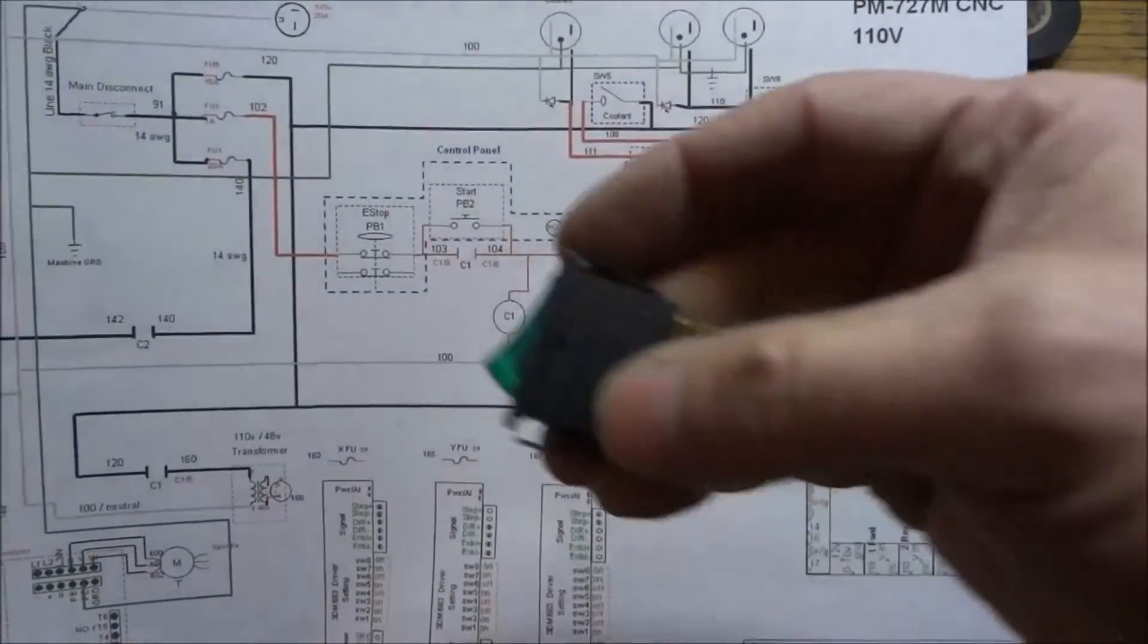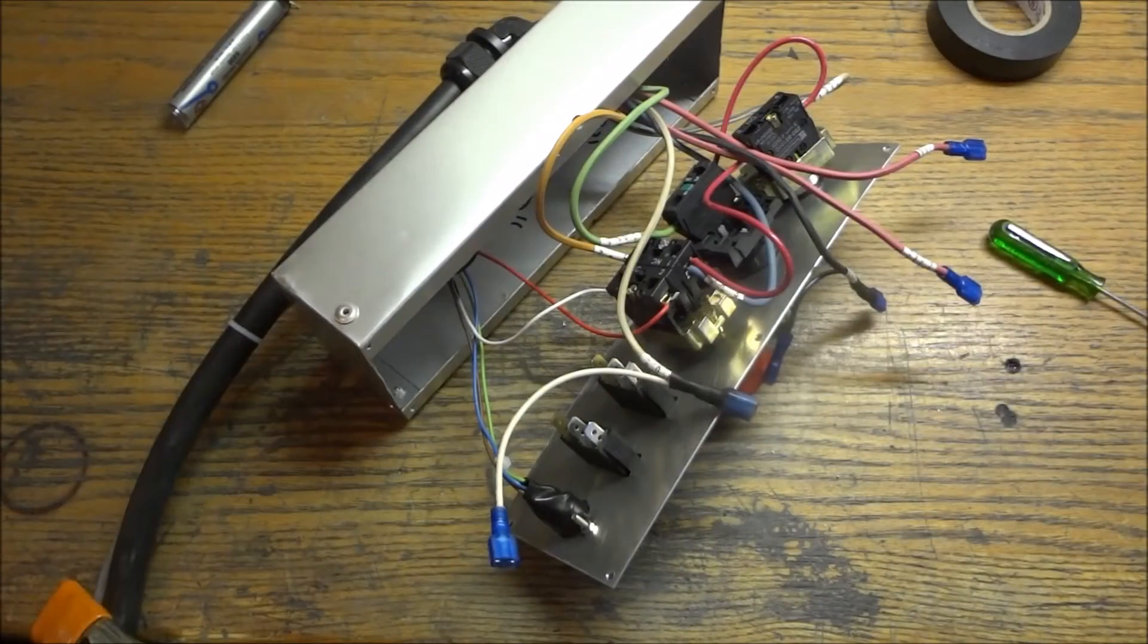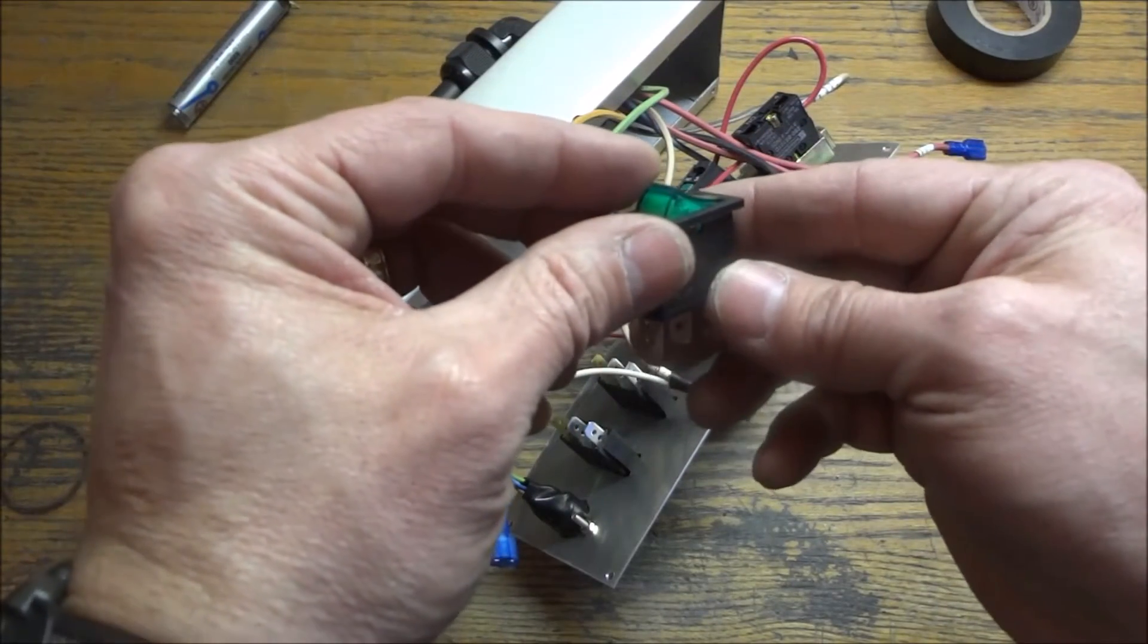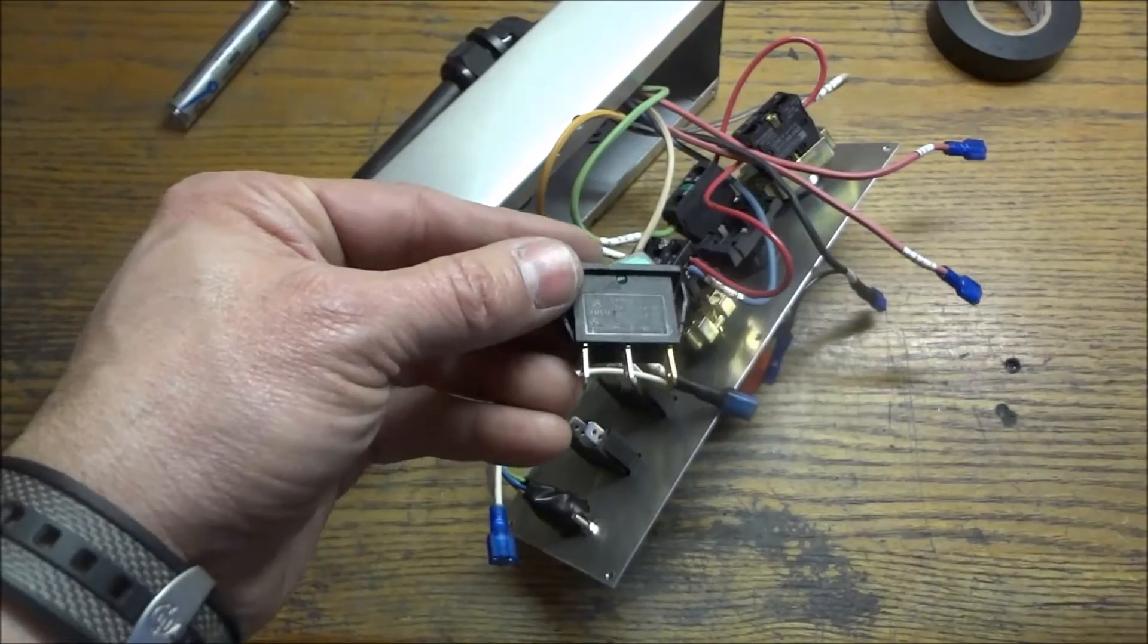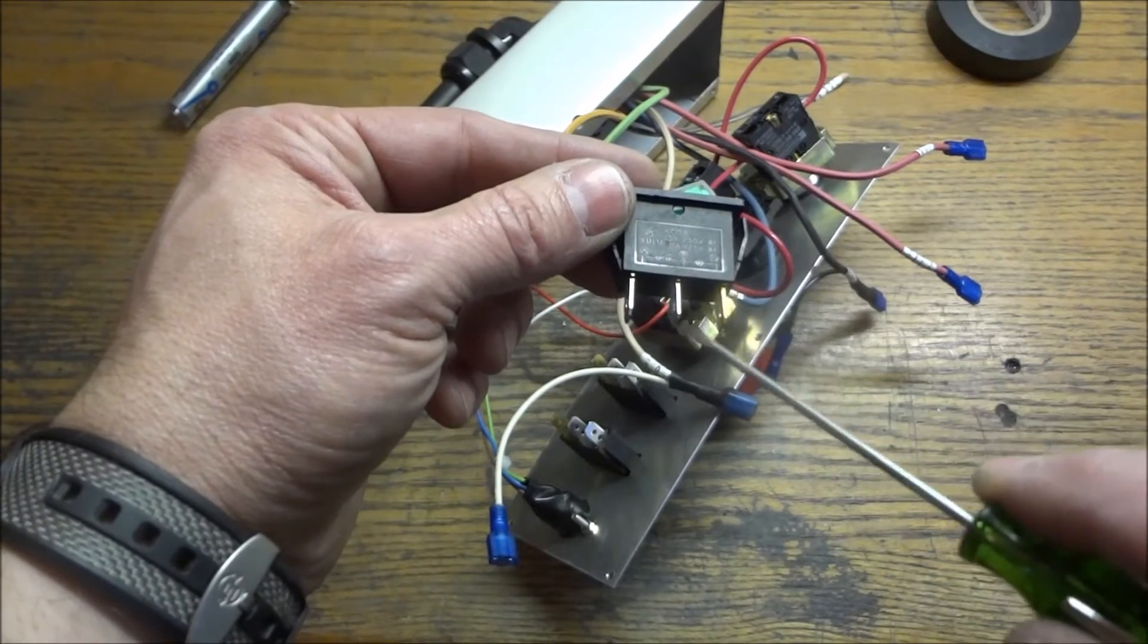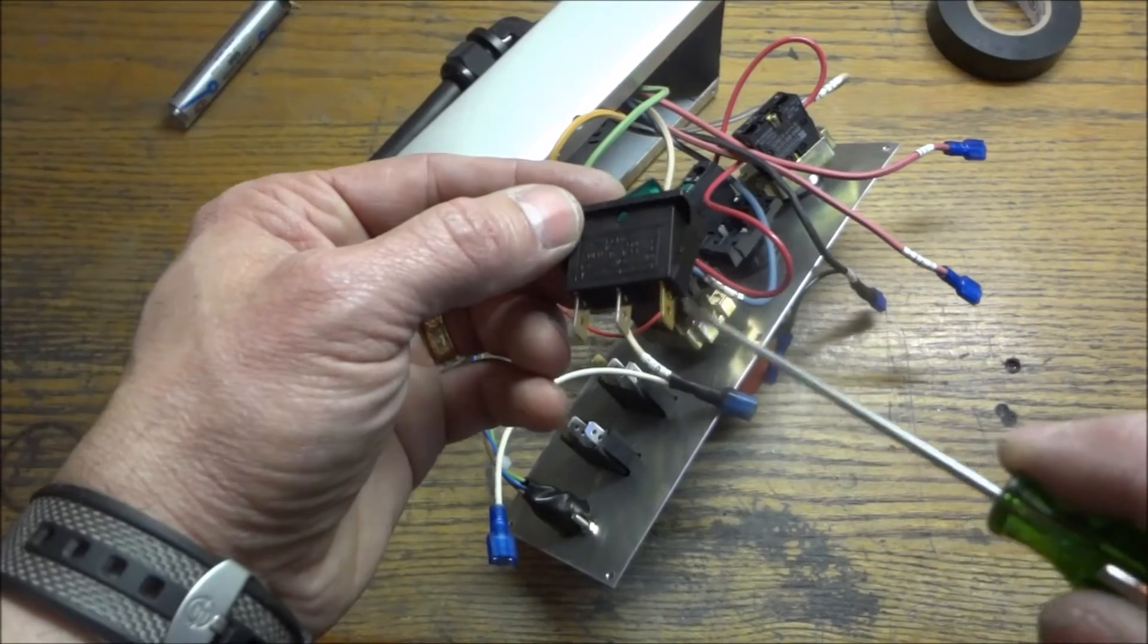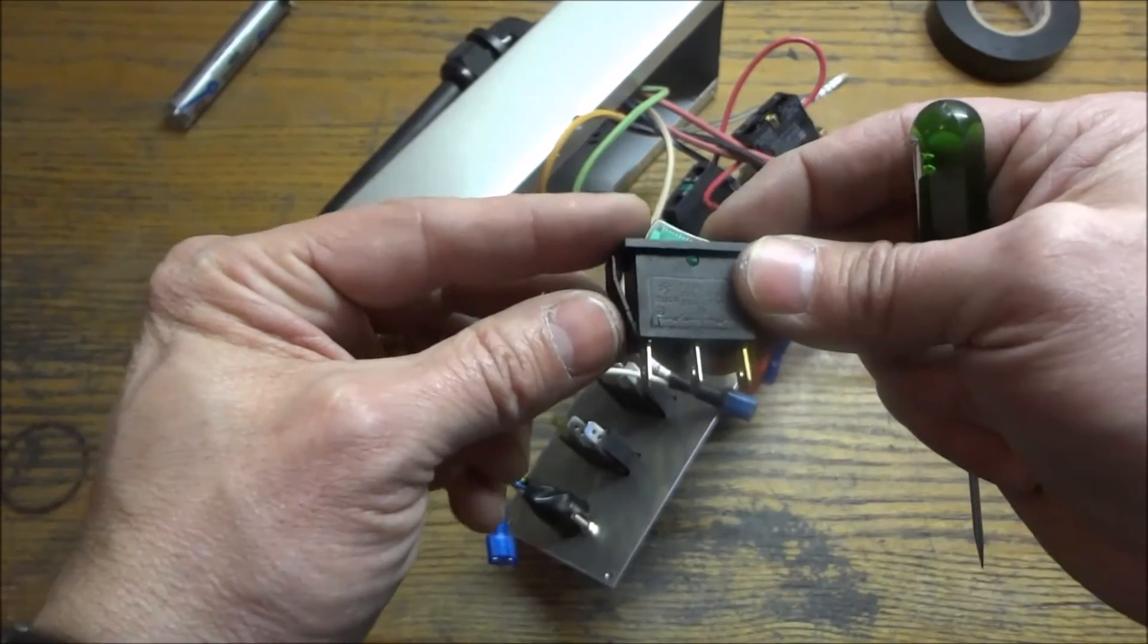So all we have left now to connect is our two rocker switches, one for our coolant and one for our computer. Now the way these rocker switches work, they're illuminated. So there's a little LED or SMD inside there and it comes on whenever there is a load. So the way they're connected, pin A is 110 volts coming in, then it's switched. And then the center pin here goes out to your load. And then on this gold colored pin, you need to have a neutral. And that will allow the switch to operate and the light to come on.